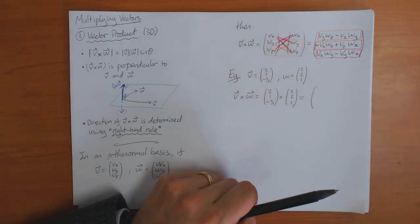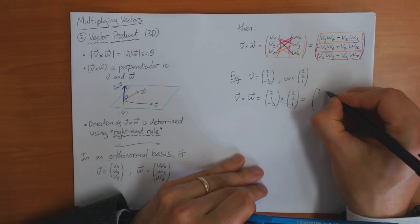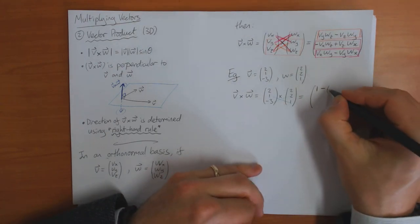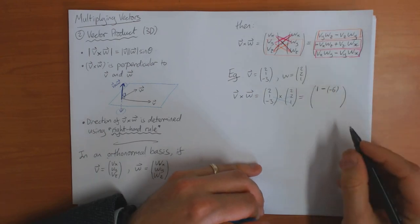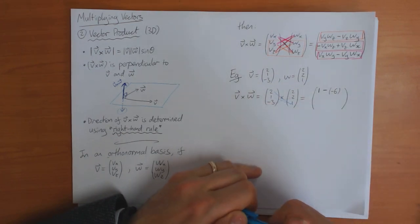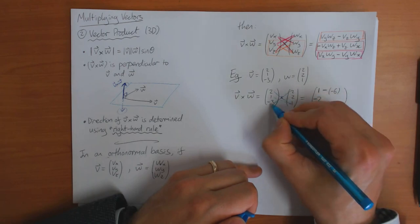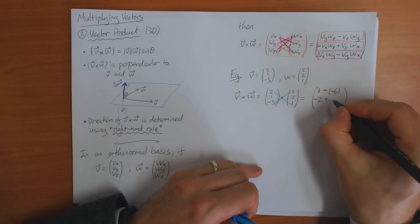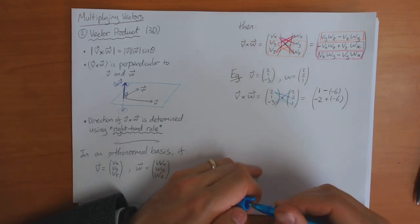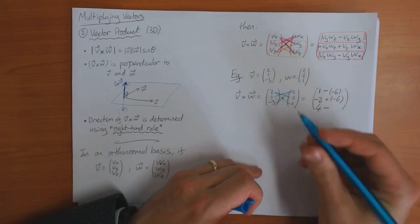For the x component, I need to do vy·wz minus vz·wy, which gives 1 minus (−6) = 7. For the y component — remembering the sign flip — I get −vx·wz + vz·wx, which gives −2 minus 6 = −8. For the z component, I do vx·wy minus vy·wx: two times two is four, minus one times two is two, giving 4 − 2 = 2.